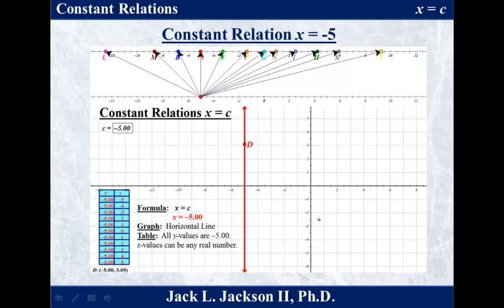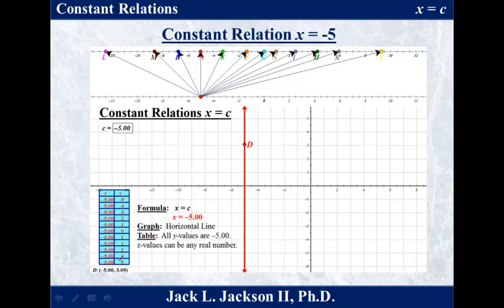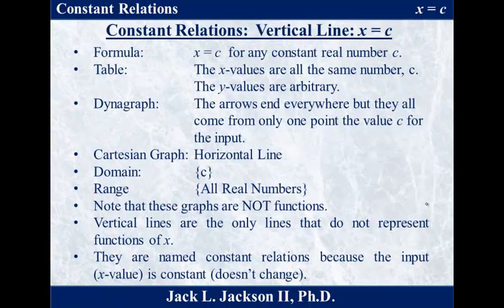So now when we're back, we can see this time the input is one particular number — in this case negative 5 — and it's the output that can change. It can be anything. So no matter what, the input is always the same but the output could be anything. This tells us that the outputs can be selected freely in our table — y can be anything. Notice y is not in the formula, so there are no restrictions on y. But the x has to be negative 5 every time, so you can see the table has all the x's as negative 5. If you graph all these points, you get a vertical line, and any point on that vertical line will have the same x-coordinate. So in general, when we have x equals c, that's a constant relation — it's a vertical line. The formula is x equals a constant for any real constant number c.